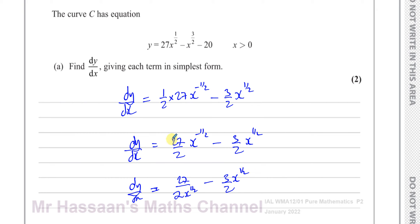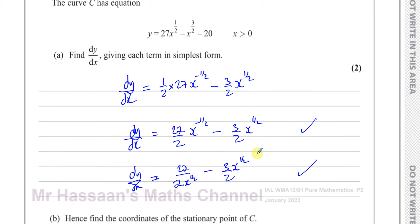Both forms are perfectly fine and correct. We can also write this as 27 over 2 root x, minus 3 root x over 2 — that's also fine, because x to the power of a half is the square root of x.